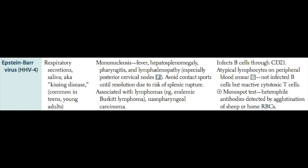The peak incidence for EBV infection is between 15 and 20 years of age. Since it's most commonly transmitted during the peak kissing years, it's also known as the kissing disease. EBV has also been associated with development of Hodgkin's and endemic Burkitt's lymphomas, as well as nasopharyngeal carcinomas. We can diagnose EBV using a positive monospot test, in which heterophilic antibodies are detected by agglutination of sheep red blood cells.